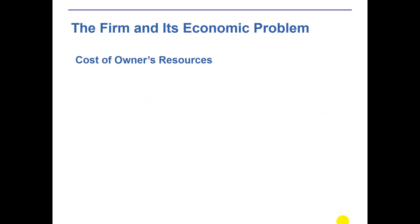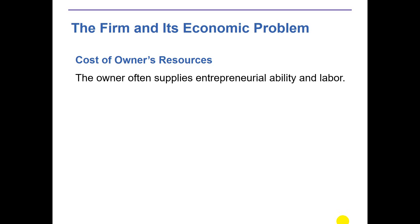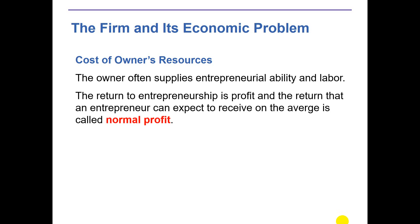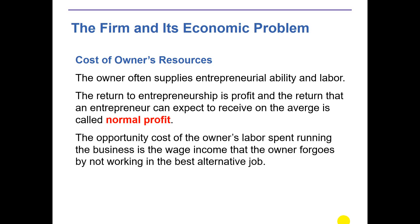Here comes the cost of owner's resources. Owners often supply entrepreneurial ability and labor. The return to entrepreneurship is profit, and the return that an entrepreneur can expect to receive on average is called normal profit. The opportunity cost of the owner's labor — the time spent running the business — is the wage income that the owner foregoes by not working at the best alternative job. Each and every decision has an opportunity cost, so the cost of running a business includes the wage foregone that the owner might earn elsewhere.